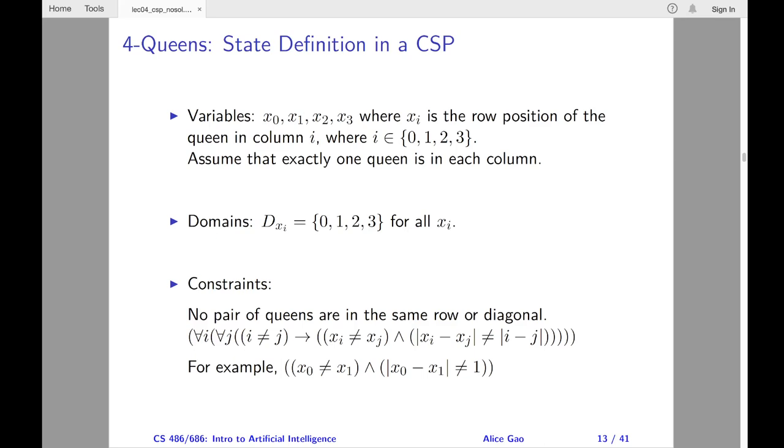If the queens are in the same diagonal, then the difference in their row positions must be equal to the difference in their column positions. We must require these two differences to be not equal. For example, to encode that the leftmost two queens cannot be in the same row and also cannot be in the same diagonal, we have x0 is not equal to x1 and the absolute difference between x0 and x1 is not 1.